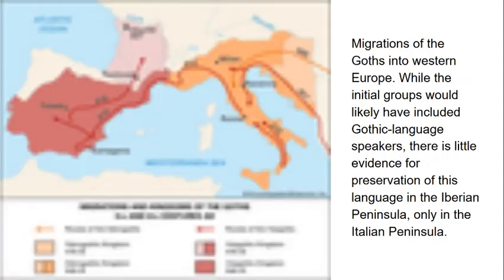Starting in the fourth century CE, Gothic-speaking peoples migrated into Western European regions. The Ostrogoths founded a kingdom in the Italian Peninsula under King Theodoric in 493 CE, while the Visigoths settled in the Iberian Peninsula under King Euric in 466 CE. 'Ostrogoths' essentially means 'Eastern Goths' and 'Visigoths' the 'Western Goths,' though there is some controversy about whether 'Ostrogoth' might derive from a Latin source meaning 'Southern Goths.'